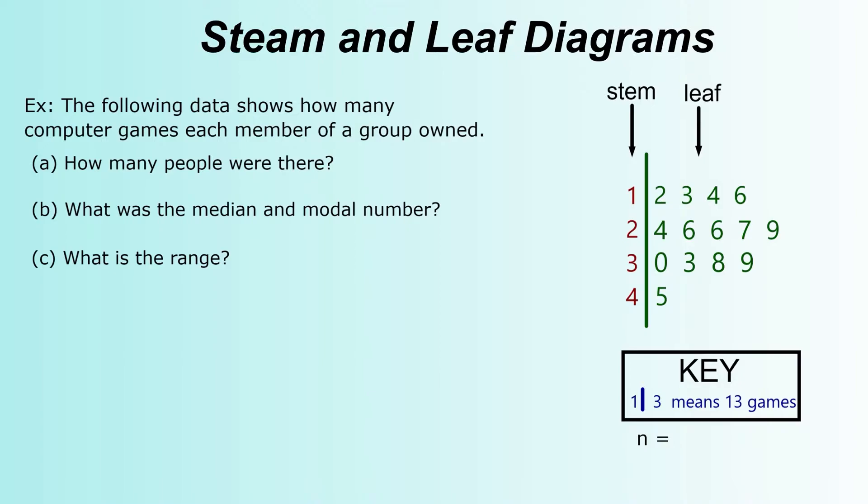n is how many pieces of information are actually contained within the stem-and-leaf diagram. So here, basically what we're doing is counting the leaves. Every leaf represents one piece of information. So we're counting how many leaves there are. 1, 2, 3, 4, 5, 6, 7, 8, 9, 10, 11, 12, 13, 14. So we've got 14 pieces of information in the stem-and-leaf diagram.